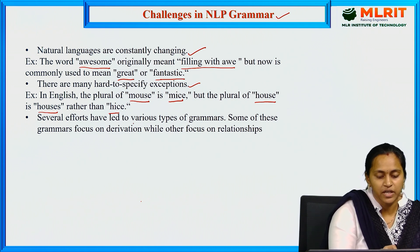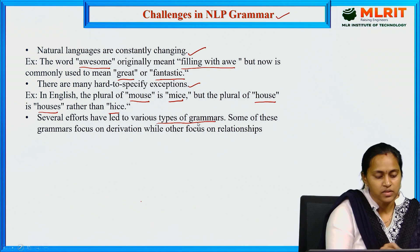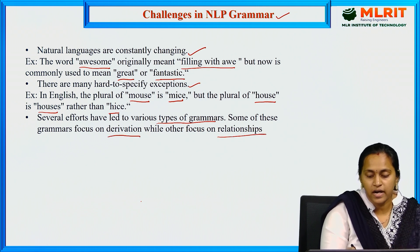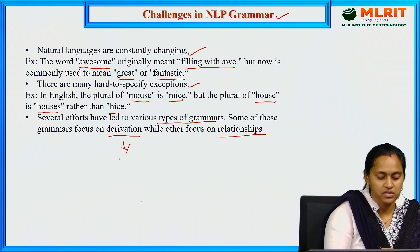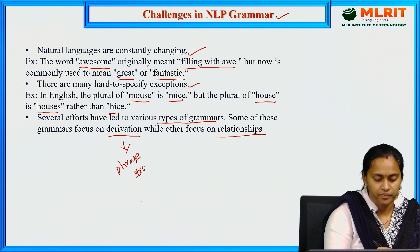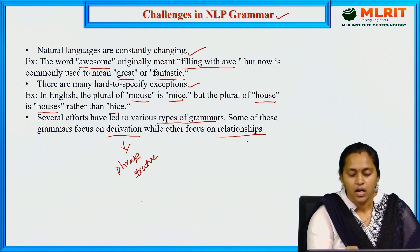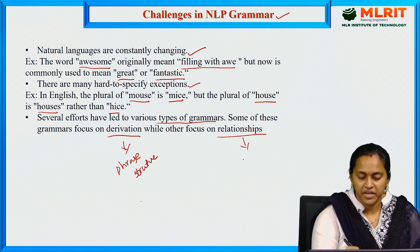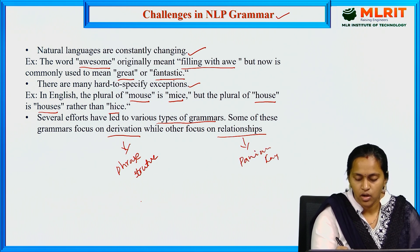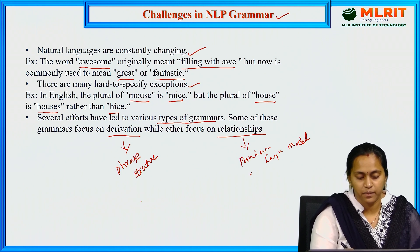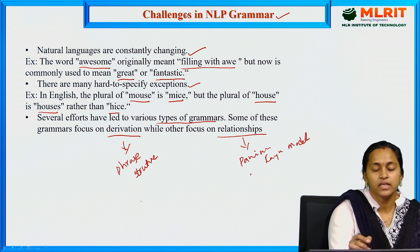Several efforts have led to various types of grammars. Some of these grammars focus on derivation while others focus on relationships. Some derivation grammars are phrase structure grammar. The relationship grammars include the Paninian framework, generative grammar, and context-free grammar.